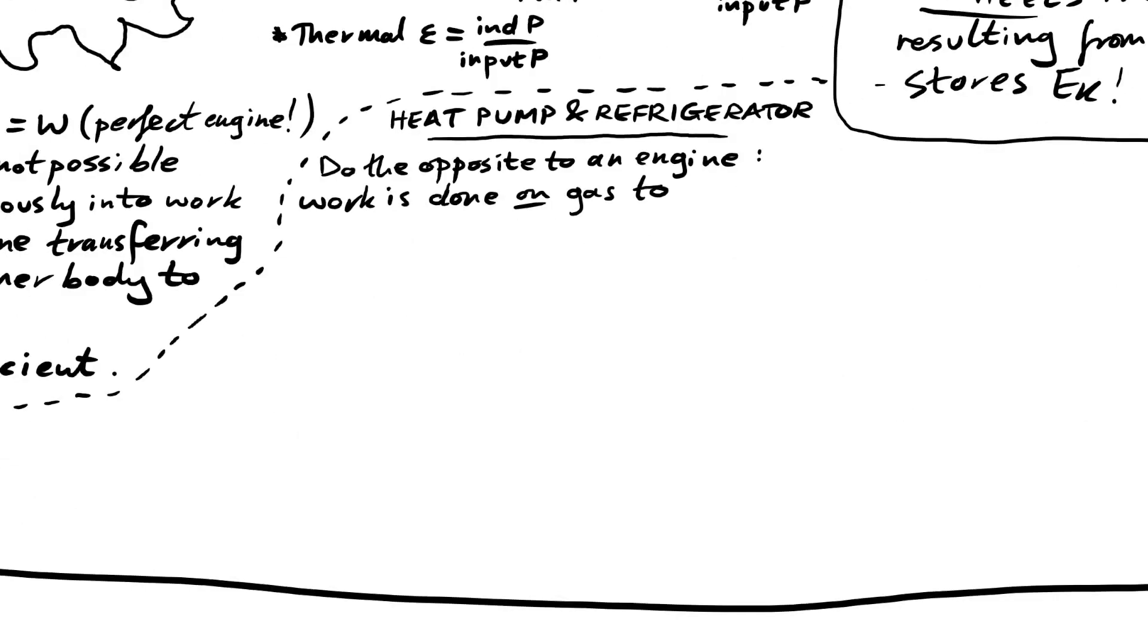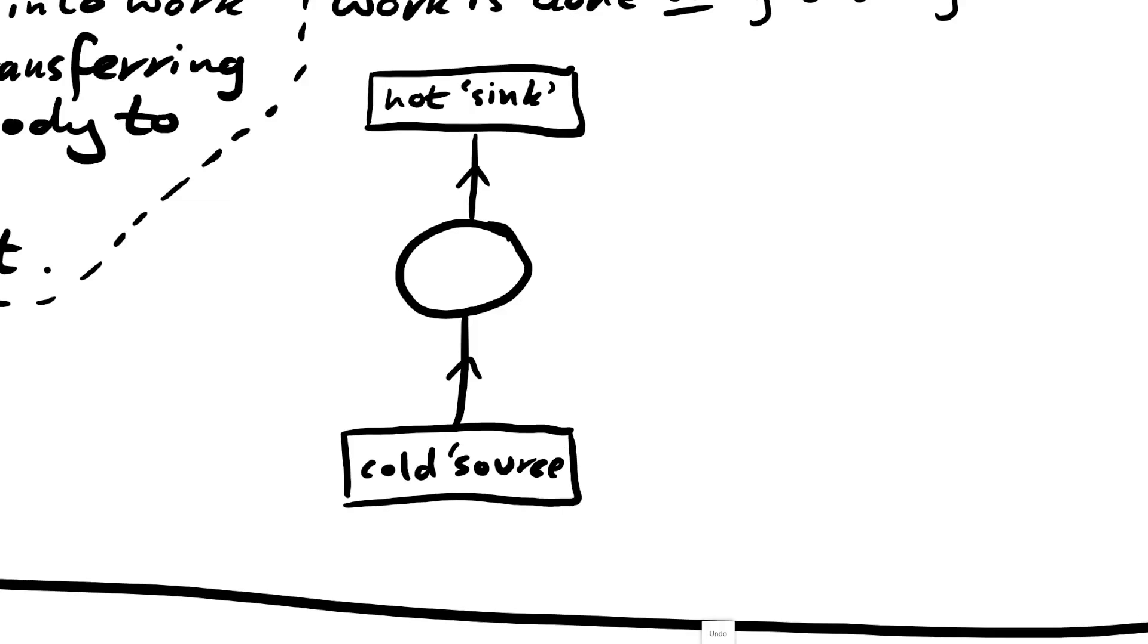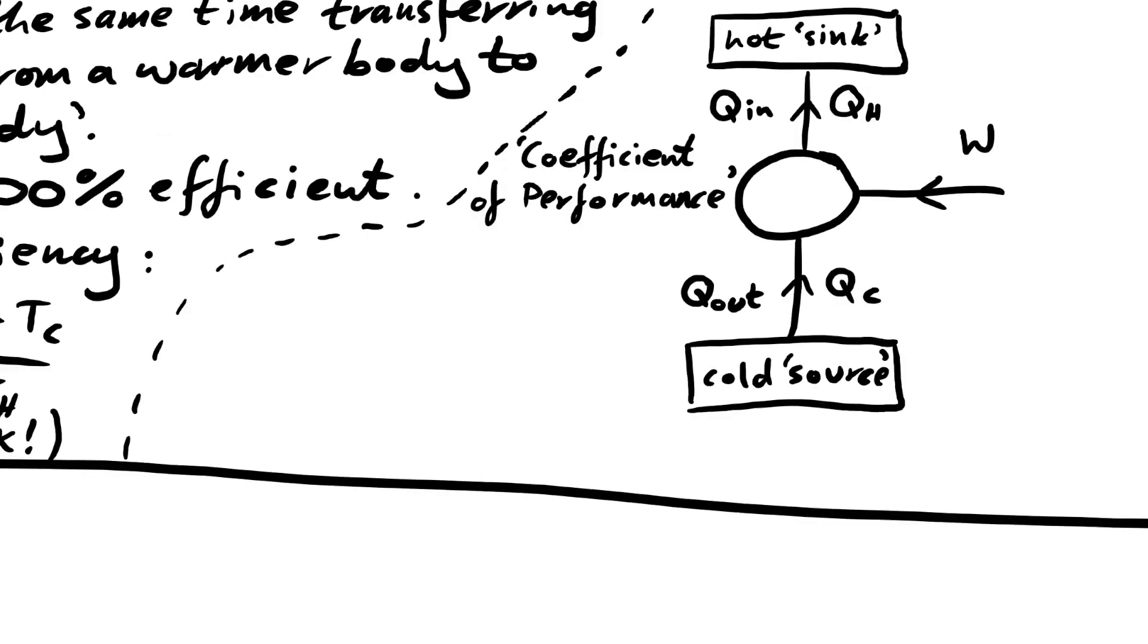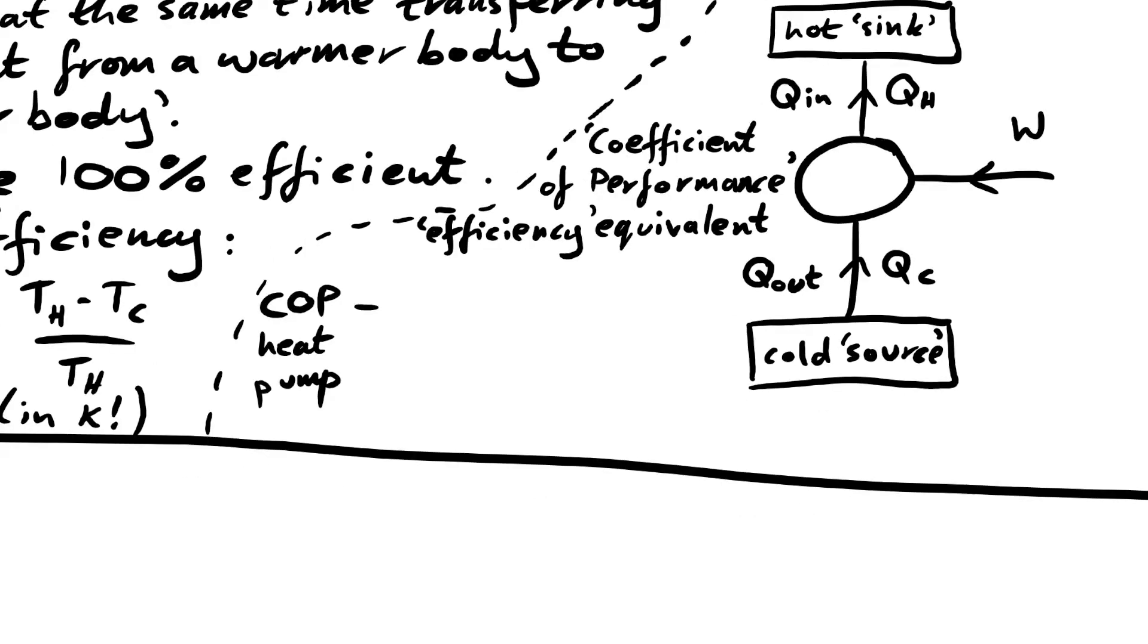Heat pumps and refrigerators, they do the opposite to an engine. Instead of us getting work out, we do work on a gas to get energy out. Here we have an energy flow diagram again. Thing is now is that we're putting in work and we're getting heat from a cold source and we're forcing it into a hot sink. Now with a heat pump, we're interested in how much energy we're actually able to force into an already warmer place. So for instance, you're getting cold air from outside of your house and you're putting work in and you're making it hotter and you're forcing it inside where it's already warmer. We need to know how efficient it is, quote unquote. So we don't have efficiency, but we have a coefficient of performance or COP. It's just going to be the other way around to efficiency. So it's going to be Q H for a heat pump divided by the work done.